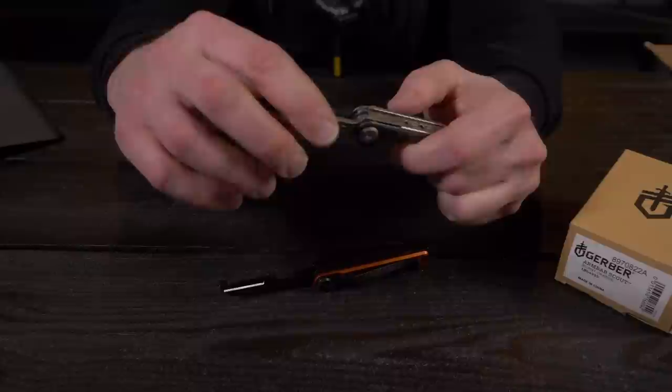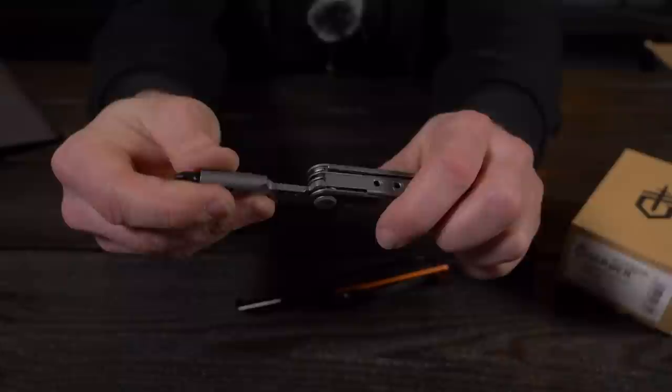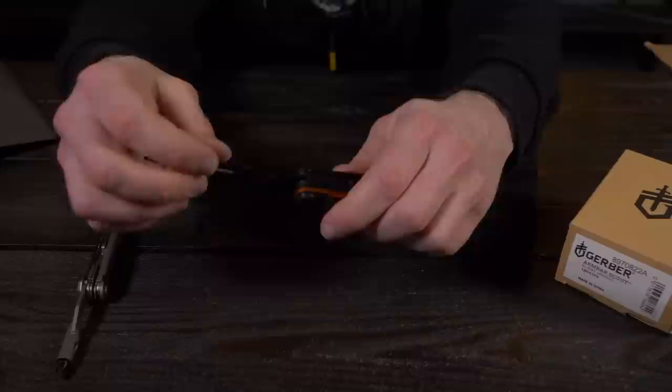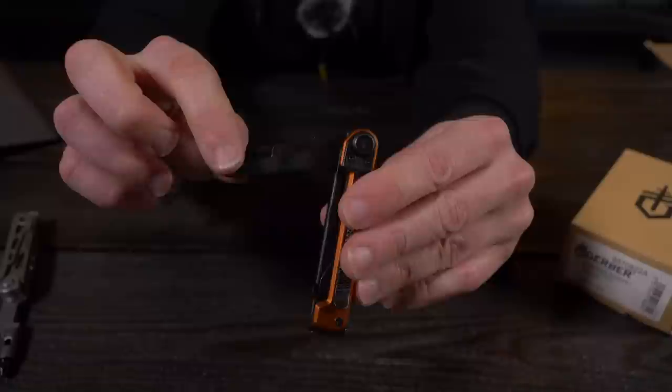Go back to the drawing board. I probably said this in my video a few years back, I don't remember, but go back to the drawing board. And when you release the Gerber Armbar Drive 2, make sure you put this driver on a lock or at the very least a super strong slip joint. This is unacceptable. And even the scissors here on the Armbar Scout are leaps and bounds above the driver here on the Armbar Drive.